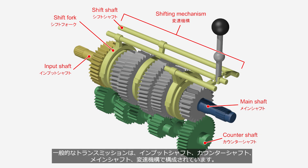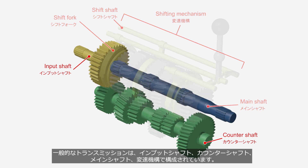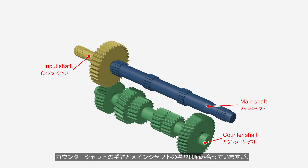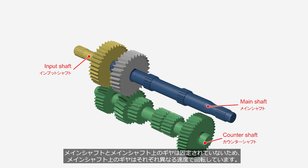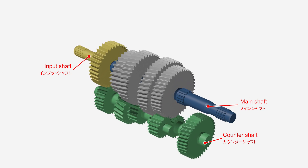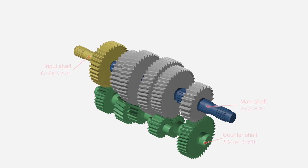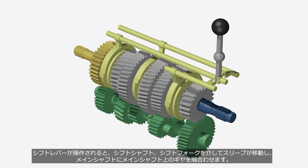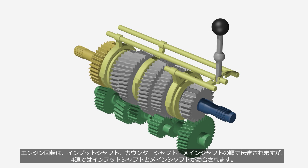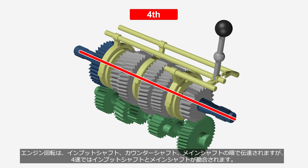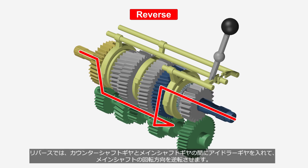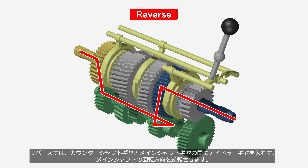A typical transmission consists of an input shaft, a counter shaft, a main shaft, and a shifting mechanism. In the input shaft and counter shaft, the shafts and gears are fixed and rotate together as a unit. The gears on the counter shaft mesh with the gears on the main shaft. But the gears on the main shaft and the main shaft are not fixed, so they rotate at different speeds. When the driver operates the shift lever, the sleeve moves via the shift shaft and shift fork to engage the gear on the main shaft. Engine rotation is transmitted sequentially through the input shaft, counter shaft, and main shaft — but in fourth gear, the input shaft and main shaft are engaged directly. In reverse, the direction of rotation of the main shaft is reversed by an idler gear meshing with the counter shaft gear and the main shaft gear.